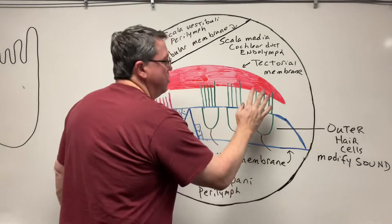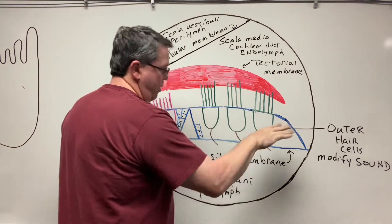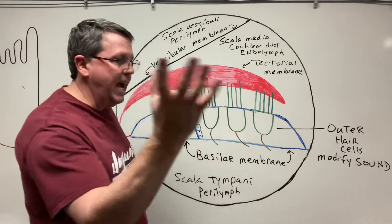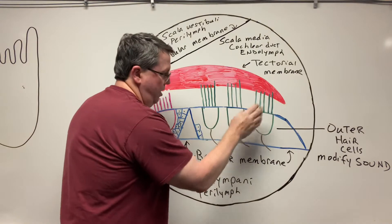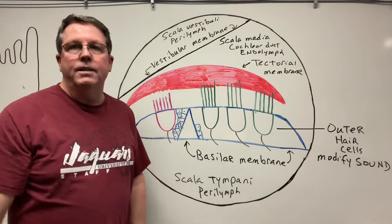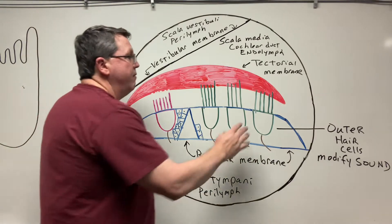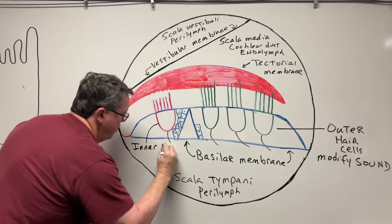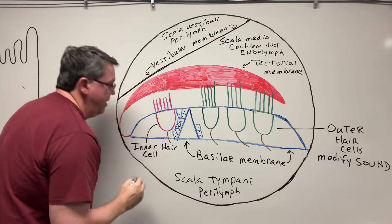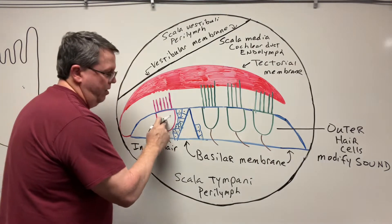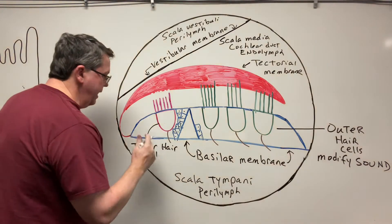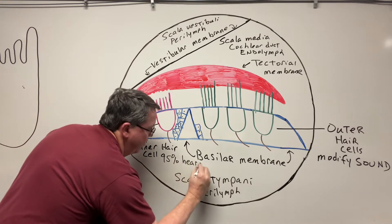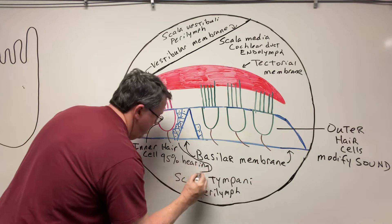On the outer hair cells — you actually have about 12,000 outer hair cells. I'm only showing three because this is just a cross-section; you have three rows of them, one after the next, about 12,000 total in your organ of Corti. This right here is the inner hair cell, and you're going to have about 3,500 of these. You have a lot more outer hair cells than inner hair cells, and the inner hair cells do about 95% of your hearing.